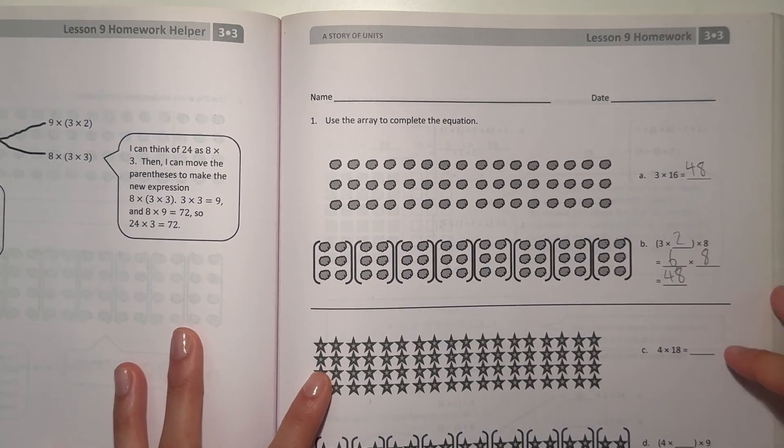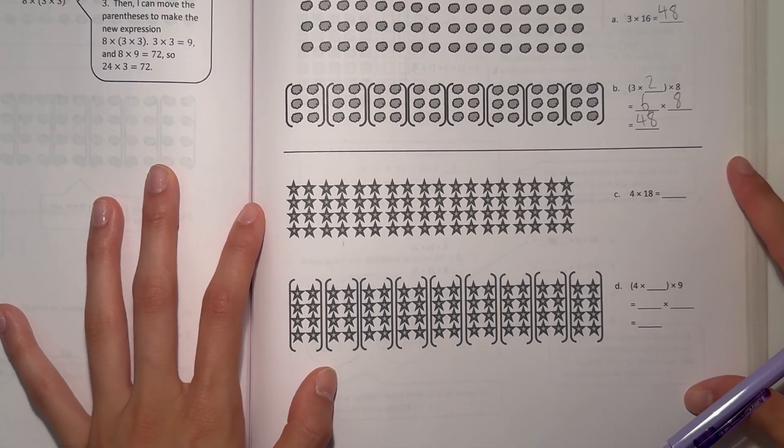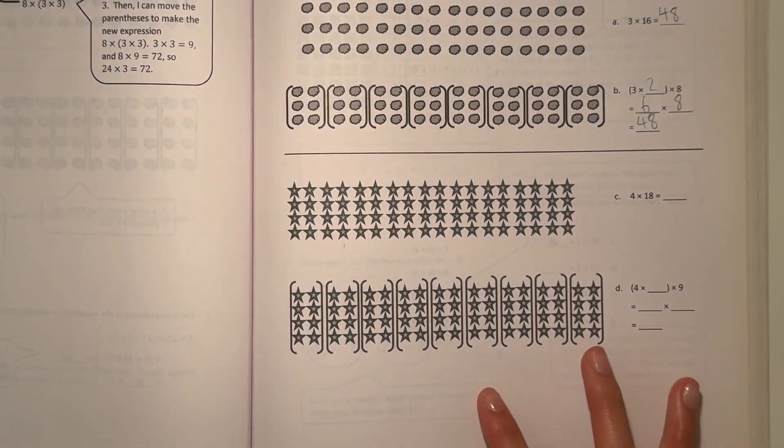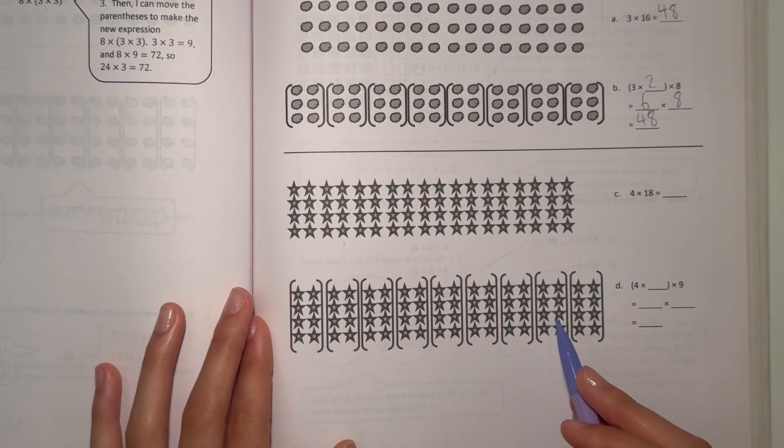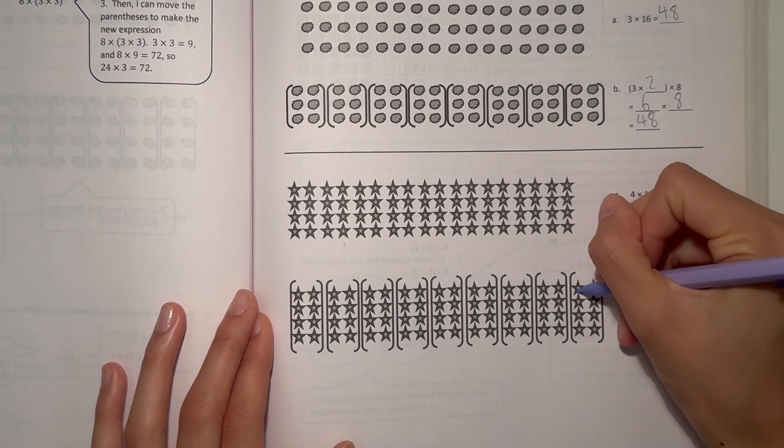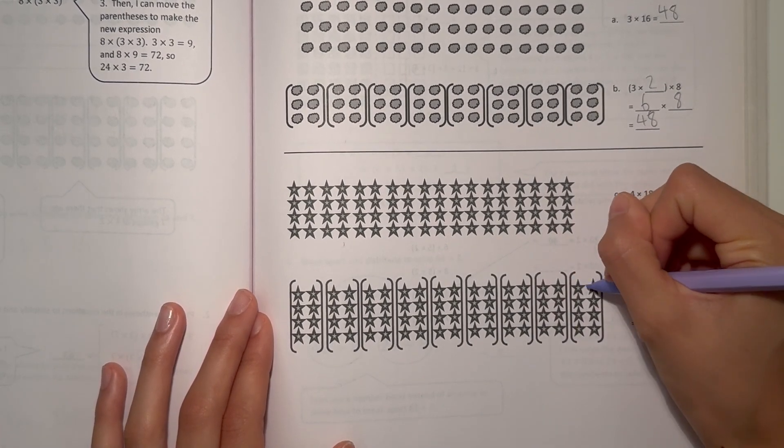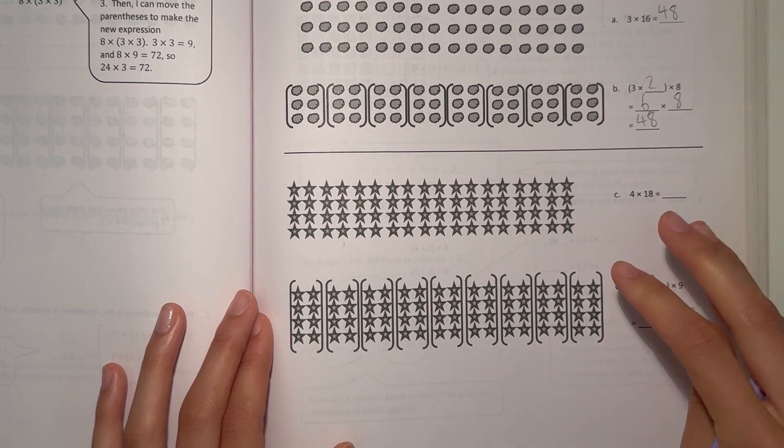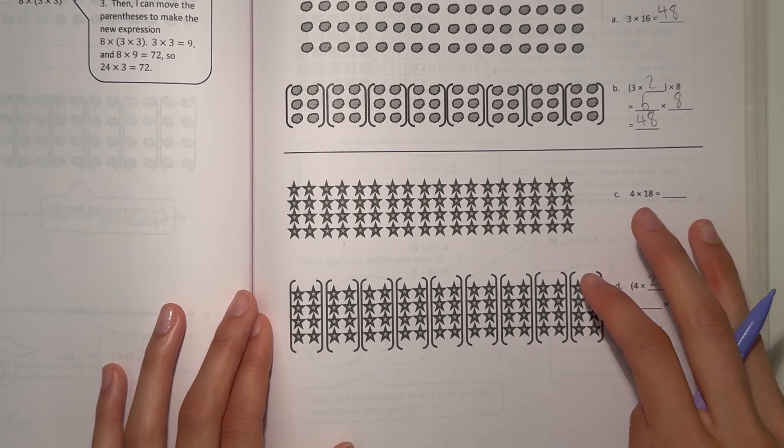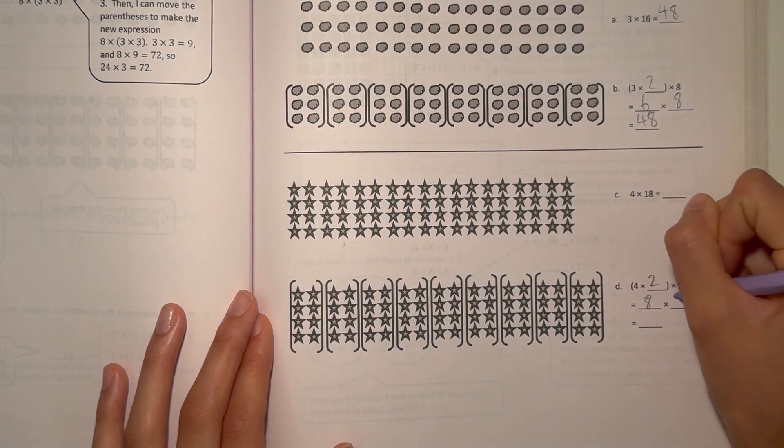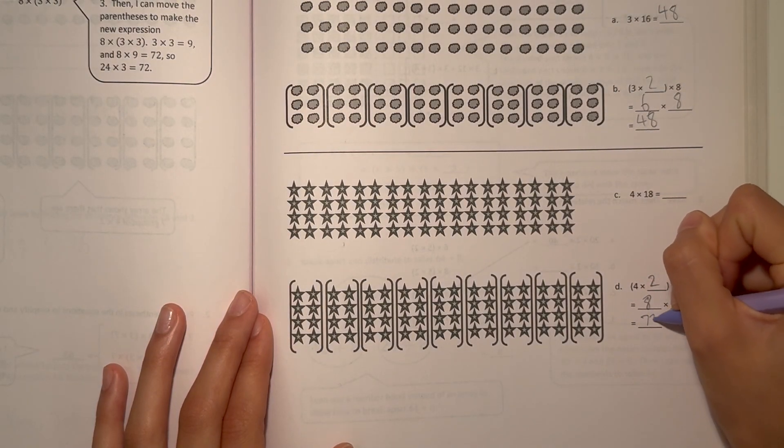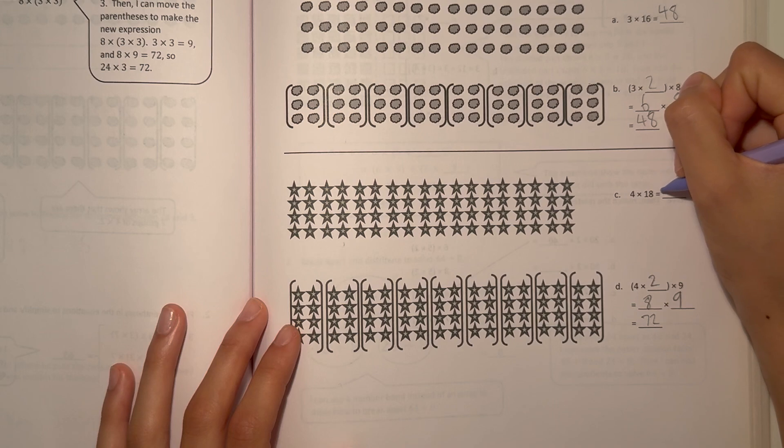Alright, and next one, we have 4 times 18. So they broke it apart into 9 groups. [Counts 1, 2, 3, 4, 5, 6, 7, 8, 9]. And each group is 4 times 2, and that's 8, so there's 8 stars in each group. So 4 times 2 is 8, times 9, and that would be 72. So 4 times 18 is 72.